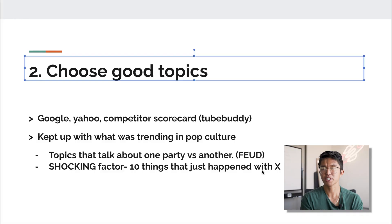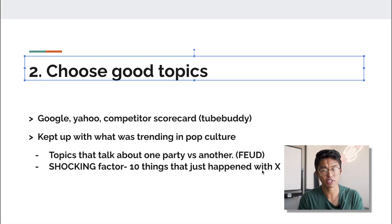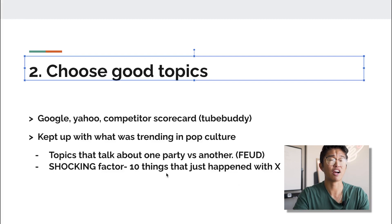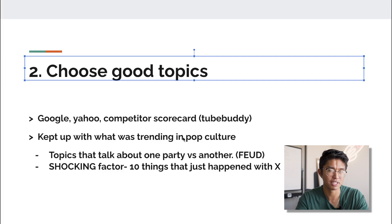So those are two types of topics to look for: the feud factor, where the topic involves one party versus another, and the shocking factor. If you ever come across viral videos in general, you'll see that they usually have one of these two elements, if not both.